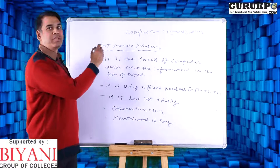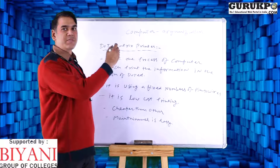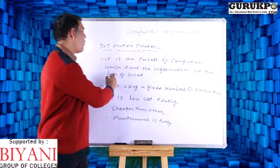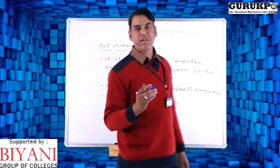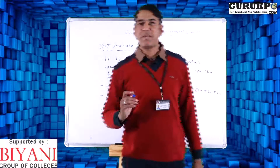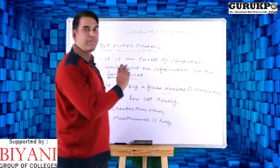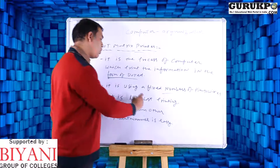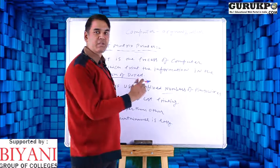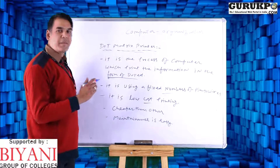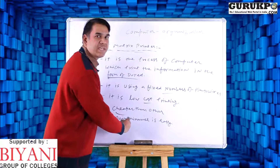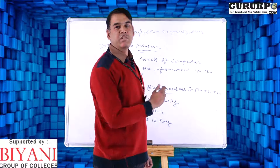Let us discuss the dot matrix printer. Dot matrix printer is particularly an impact type of printer. It is a process by which the computer prints information in a particular dotted form. In government organizations, normally this kind of printer is used. It uses a fixed number of pins and wires. It is low cost printing — if we want to print something on a particular page, the low cost printing will be available and the paper cost is very reduced. It is cheaper than other printers and maintenance is also very easy; we can change the cartridge very easily.